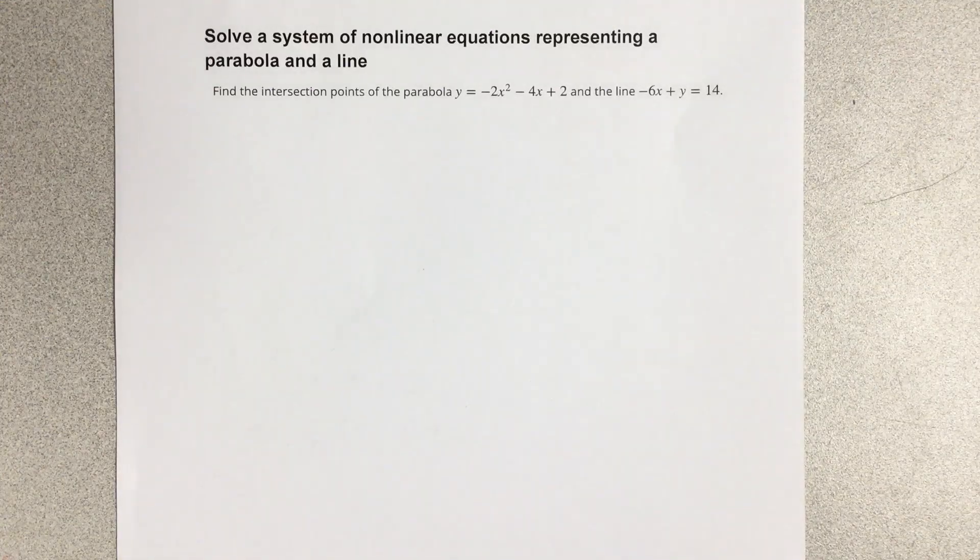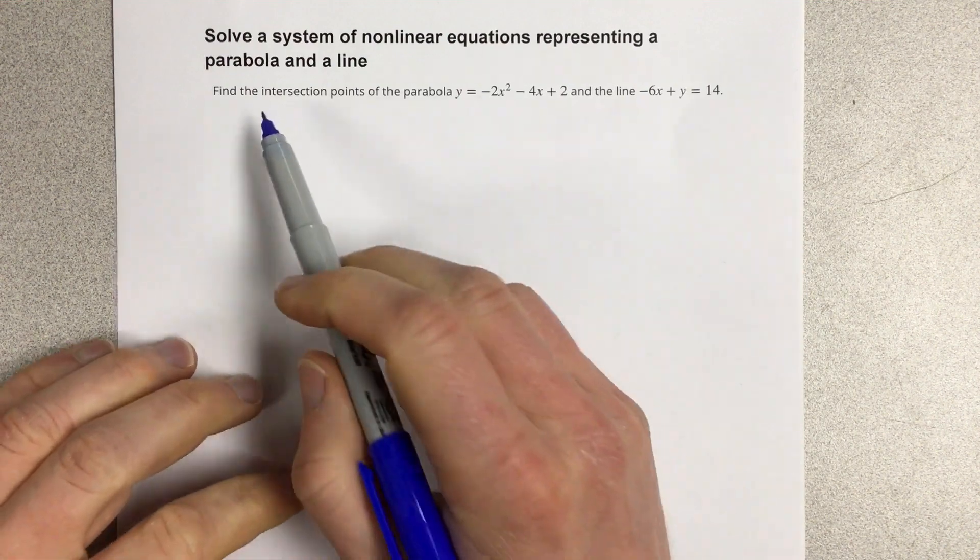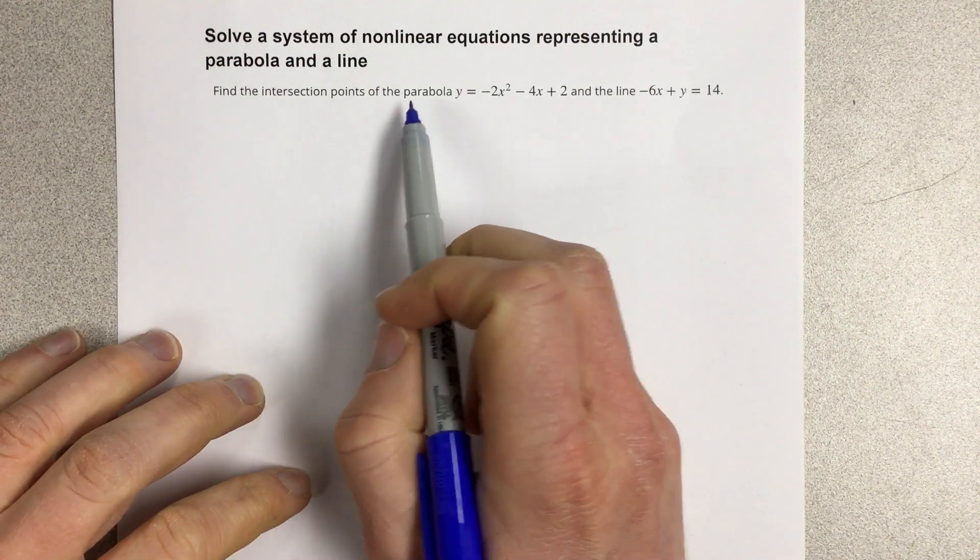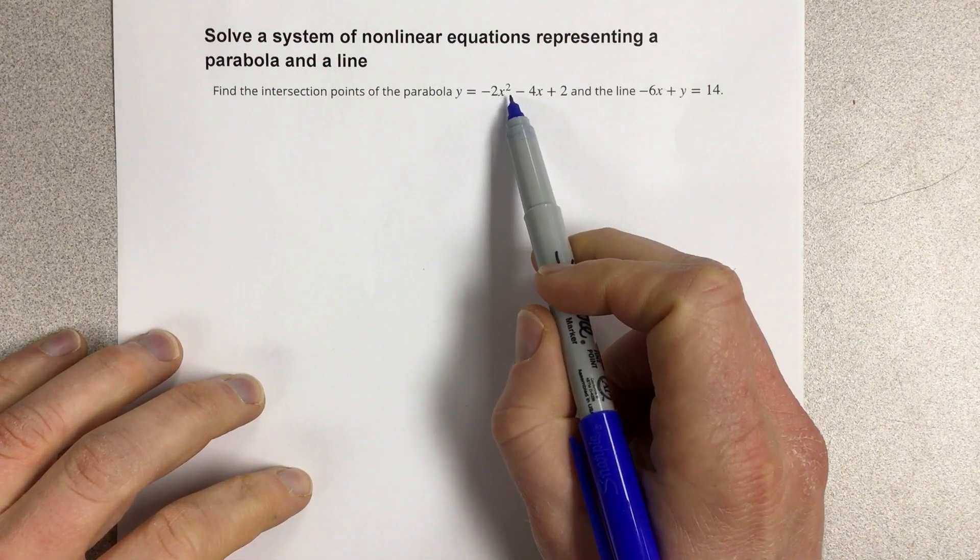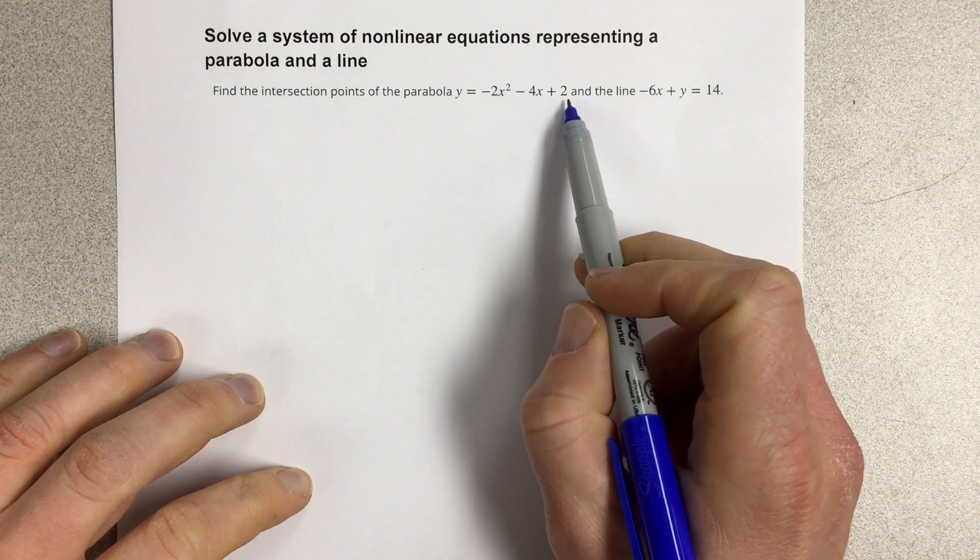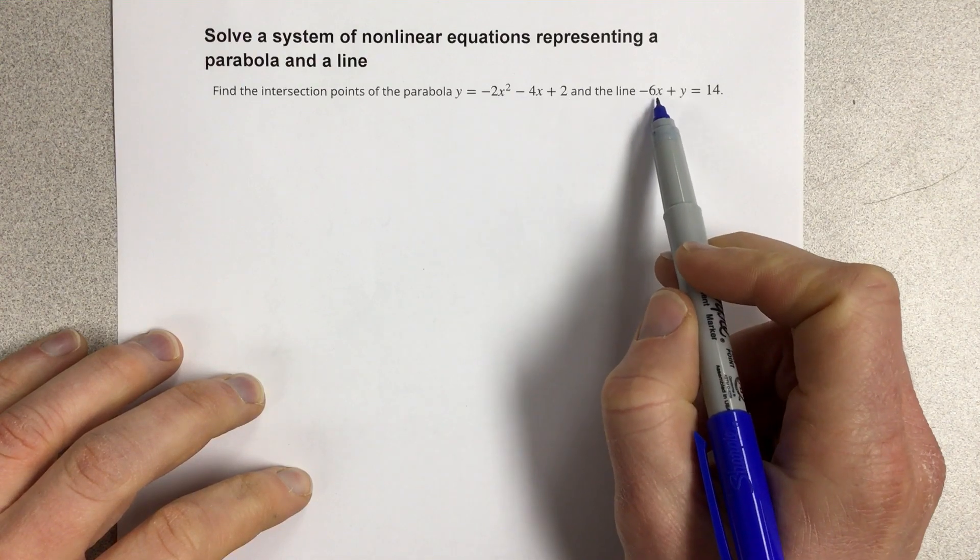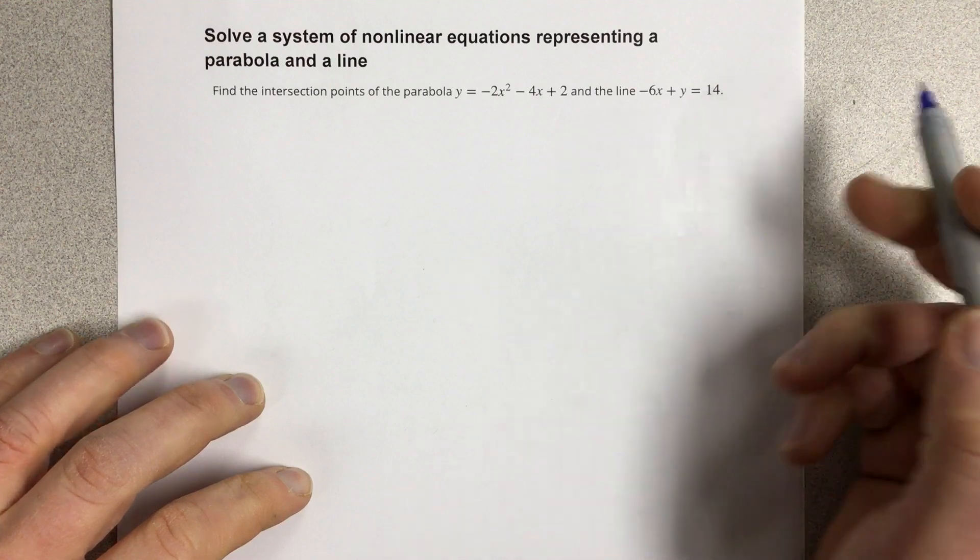In this video, we're going to solve a system of nonlinear equations representing a parabola and a line. It says, find the intersection points of the parabola y equals negative 2x squared minus 4x plus 2, and the line negative 6x plus y equals 14.